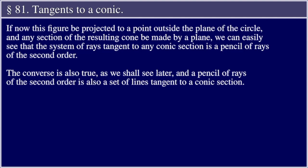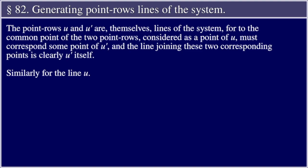Section 81: Tangents to a Conic. If now this figure be projected to a point outside the plane of the circle, and any section of the resulting cone be made by a plane, we can easily see that the system of rays tangent to any conic section is a pencil of rays of the second order. The converse is also true, as we shall see later, and a pencil of rays of the second order is also a set of lines tangent to a conic section.